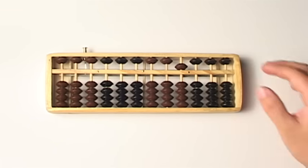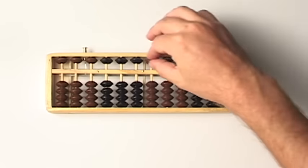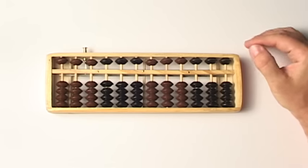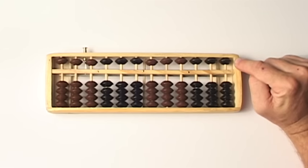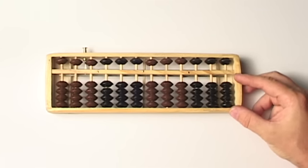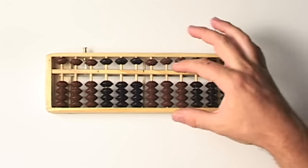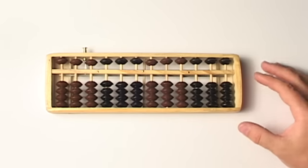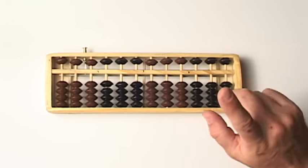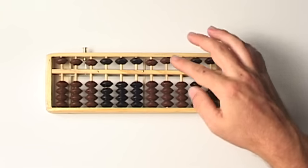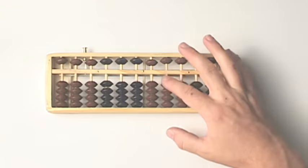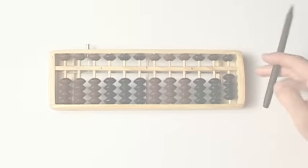These beads up here are called the heavenly beads. These beads are worth five. Down below are the earthly beads, and earthly beads are worth one each. So up here, this one's worth five; these are each worth one.